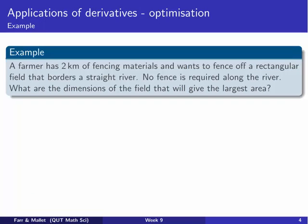Let's start off by looking at this example. A farmer has two kilometres of fencing material and wants to fence off a rectangular field that borders a straight river. No fence is required along the river. What are the dimensions of the field that will give the largest area, given that we've only got those two kilometres of fencing material? You might want to pause here and re-read that yourself.